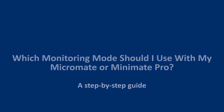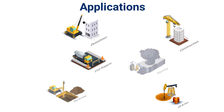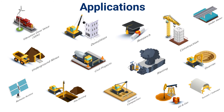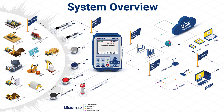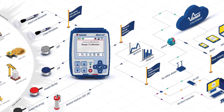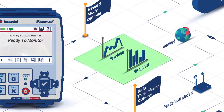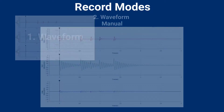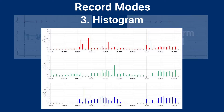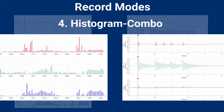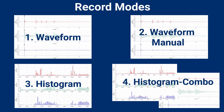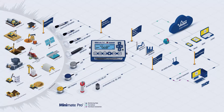With so many diverse applications to monitor vibration, noise, and air overpressure, making sure your unit monitors in the right mode is essential to collecting useful data that will protect your operations and allow you to handle any future vibration-related complaints. Instantel's Micromate and Minimate Pro units offer four record modes for your monitoring needs. This tutorial video will explain the differences between the four record modes and help you choose the best mode for your application.